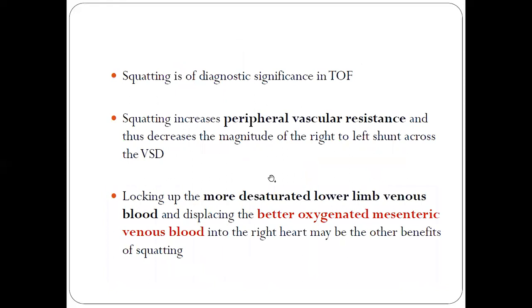Another benefit of squatting is that, other than peripheral vascular resistance, it locks up the more desaturated blood into the lower limbs. All the deoxygenated blood stays in the lower limbs, and better oxygenated blood from the mesenteric venous blood comes into the heart. Thus, higher oxygenated blood reaches the heart and there are decreased chances of cyanosis.